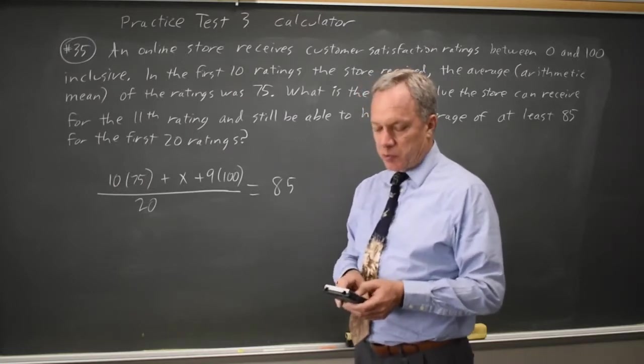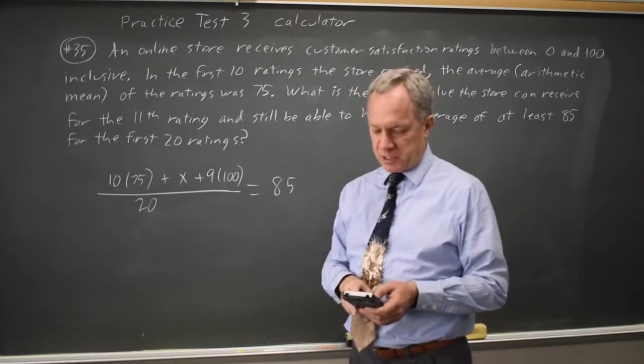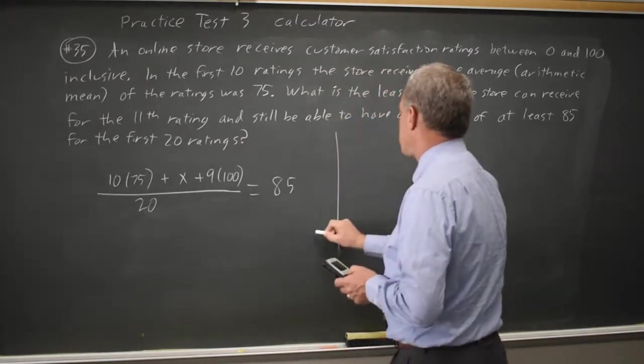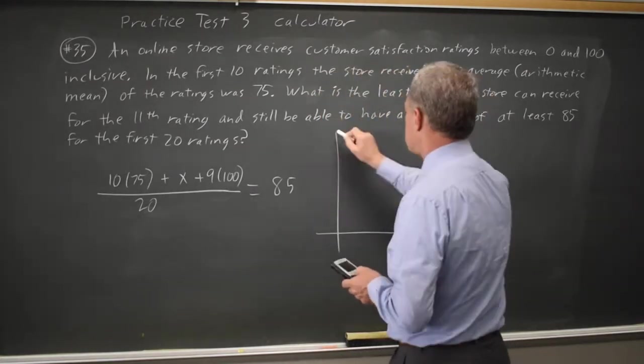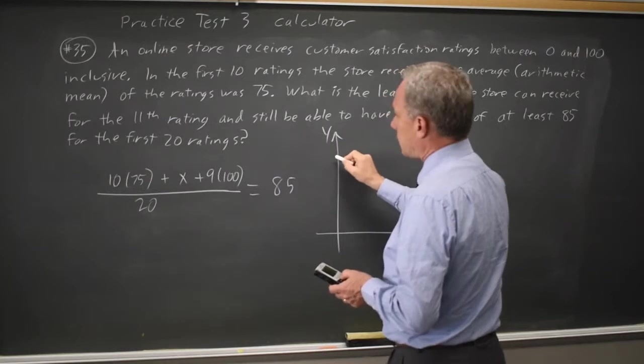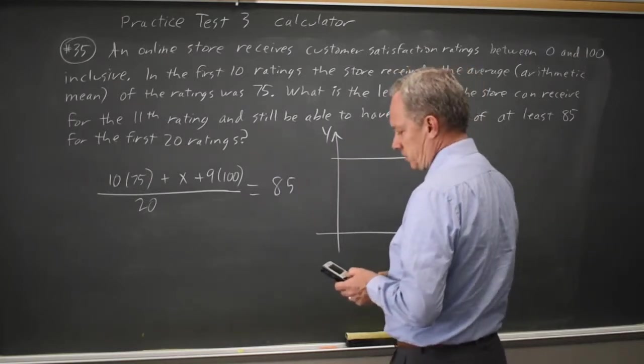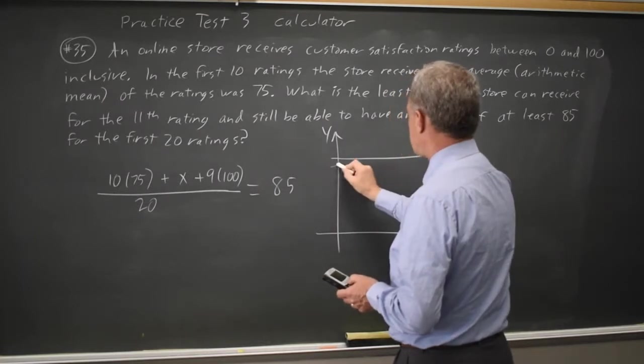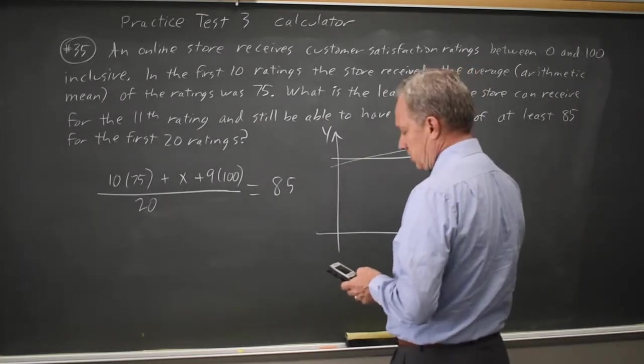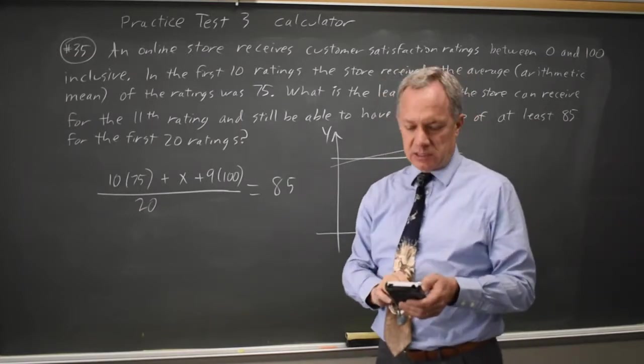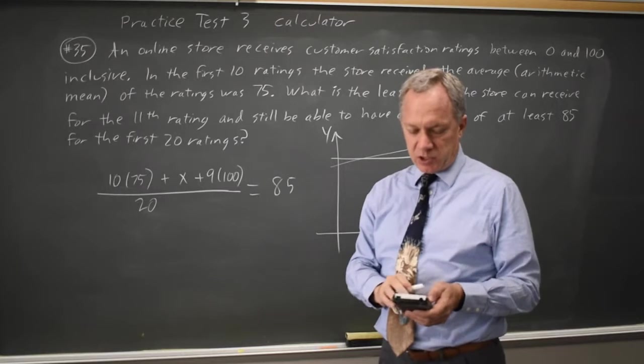For my window, I'm going to take X max and Y max both to 100 and hit graph, and my graph looks something like this. I have a constant at 85 and I have something that really looks close to constant, shallow positive slope. I'm going to exaggerate it for my left hand side.